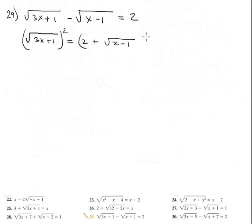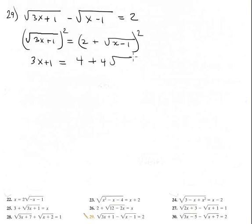Squaring gives 3x plus 1 on the left. Applying FOIL on the right: 2 squared is 4, plus 2 times 2 times the square root of x minus 1, plus (square root of x minus 1) squared, which is just x minus 1 without the radical.